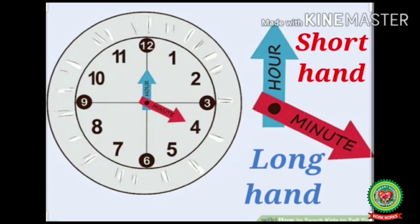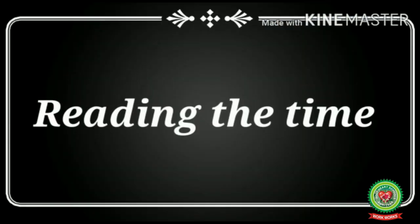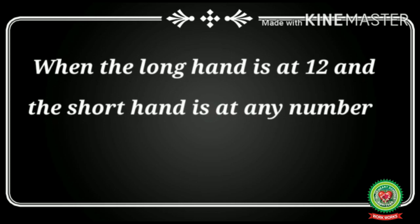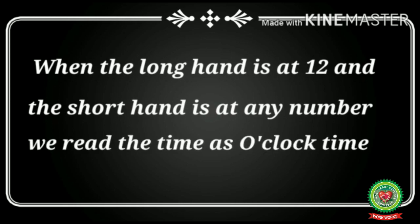When the long hand points to 12, it's called o'clock time. Now let's learn to read o'clock time. When the long hand is at 12 and the short hand is at any number, we read the time as o'clock time.